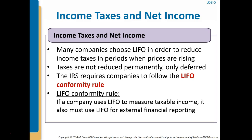This is known as the LIFO conformity rule with respect to inventory methods. Because of the LIFO conformity rule, to obtain the tax advantage of using LIFO in periods of rising prices, lower net income is reported to shareholders, creditors, and other external parties. The income tax motivation for using LIFO may be offset by a desire to report higher net income. Reported net income could have an effect on the corporation's share price, on bonuses paid to management, or on debt agreements with lenders. Research has indicated that the managers of companies with bonus plans tied to income measures are more likely to choose accounting methods that maximize their bonuses — those that increase net income.